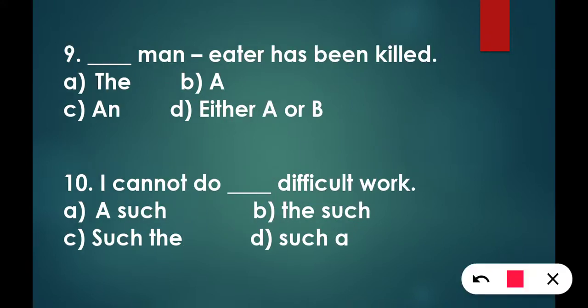Next question is: ___ man eater has been killed. What article will come here? The correct answer for this question is option D: either A or B, meaning 'an' or 'a' can come. An man eater has been killed or a man eater has been killed. I think most appropriate is B.